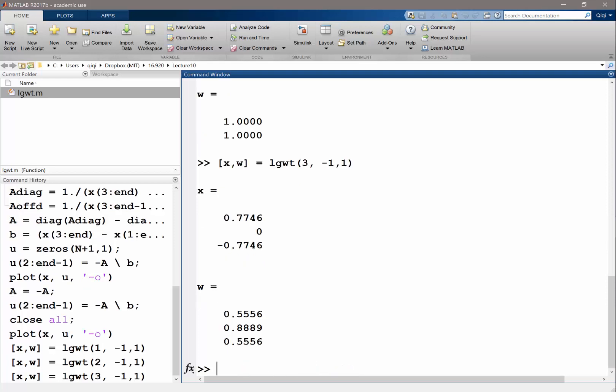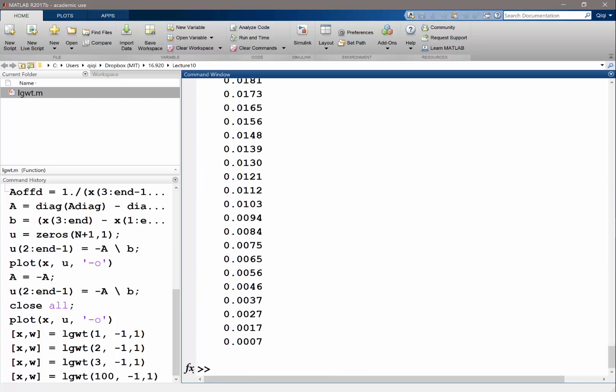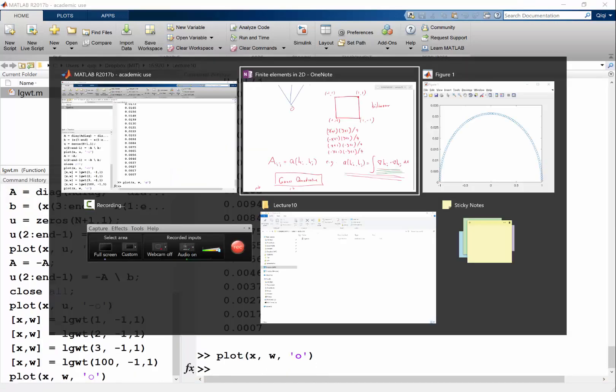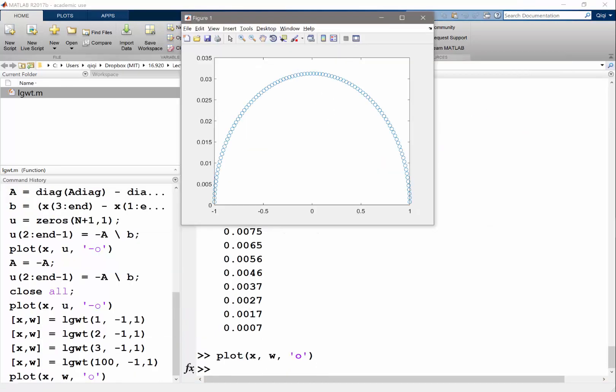And if I use three points, then I also have a symmetric arrangement. I have weights to be like that. And if you choose, let's say, 100 points and plot x w, you basically get arrangements like that. It's pretty beautiful functions. Basically, you have the x's spaced closer to each other at the two ends and sparser from each other in the middle, and the weights correspondingly have smaller weights at the two ends and the highest weight in the middle.